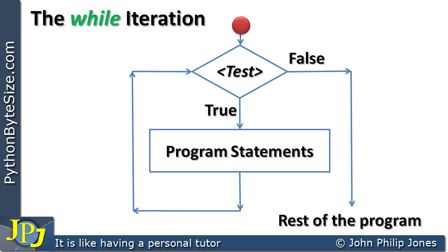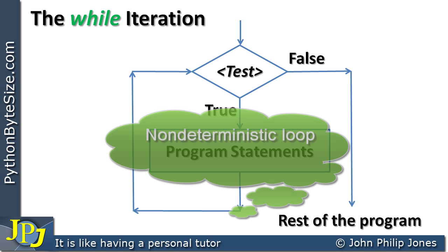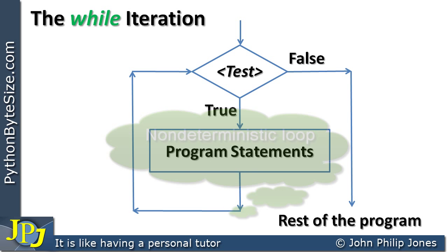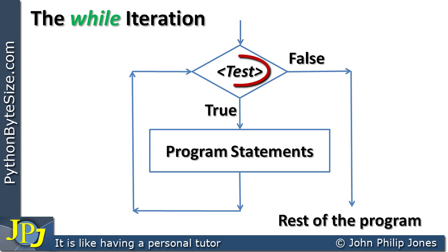Imagine this loop is part of a program and we flow into the conditional test. This could be false on the very first time we enter the test, in which case we never enter the loop at all. This is one of the possibilities with while iteration — we may never enter the loop. On other occasions we might go around the loop a million times; it depends on the condition. For this reason it's often called a non-deterministic loop — we don't know how many times we'll go around.